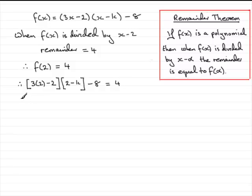Just clean this up. What have we got here? We've got 6 minus 2, which is 4. So we've got 4(2 minus k) minus 8 equals 4. I'm going to add 8 to both sides at this stage, so we've got 4 add 8, which equals 12.